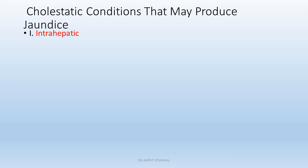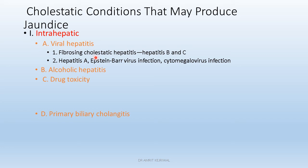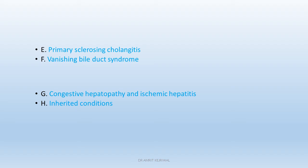Cholestatic conditions that may produce jaundice — intra-hepatic causes — include viral hepatitis, alcoholic hepatitis, drug toxicity, and primary biliary cholangitis. Hepatitis B and C can cause fibrosing cholestatic hepatitis. Hepatitis A, Epstein-Barr virus, and cytomegalovirus can cause cholestatic jaundice. Drugs such as anabolic and contraceptive steroids can cause cholestatic jaundice. Cholestatic hepatitis can be caused by chlorpromazine and erythromycin estolate. Chronic cholestasis can be caused by chlorpromazine and chlorpropamide. Cholestatic conditions also include primary sclerosing cholangitis and vanishing bile duct syndrome.